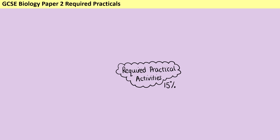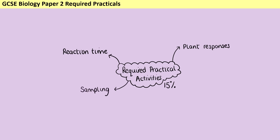For GCSE Biology Paper 2, there are only four of these. We start off with the Reaction Time Required Practical, then if you're taking GCSE Biology, there's the Plant Responses one, then there's the Sampling Practical, and finally the Decay Practical, again just for the triple scientists. So if you're taking Combined Science, there are only two required practicals to worry about.